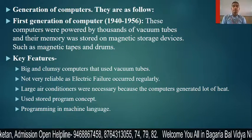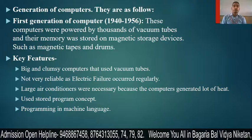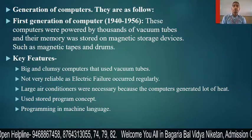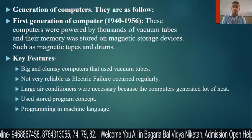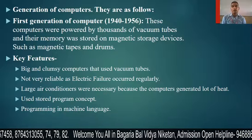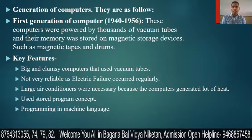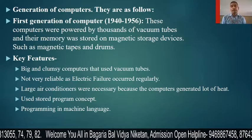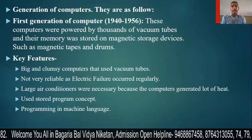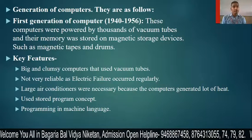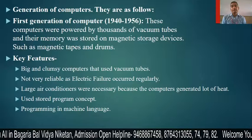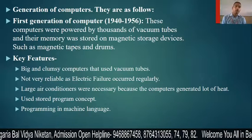If we talk about key features, first generation computers were big and clumsy and used vacuum tubes — the vacuum tube made the computer very large and clumsy in size. They were not very reliable as electricity failures occurred regularly. A large air conditioner was necessary because the computers generated a lot of heat.